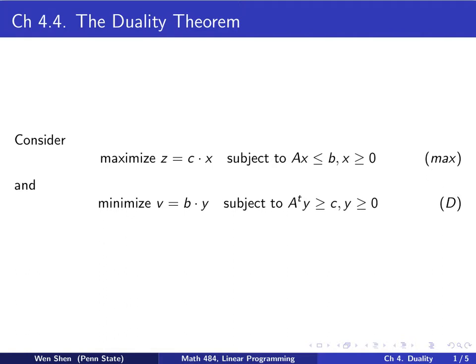And the dual for this max problem is a minimization problem. We will minimize v equals b dot y, and the constraint would be A transpose times y greater than or equal to c, and y is non-negative. We refer to this problem as D.